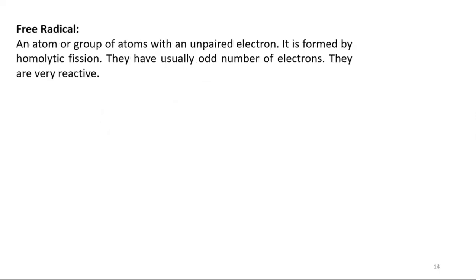A free radical is an atom or group of atoms with an unpaired electron. It is formed by homolytic fission. Free radicals usually have an odd number of electrons and are very reactive.